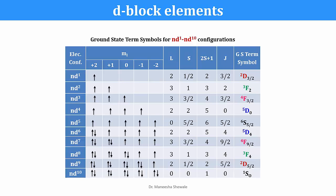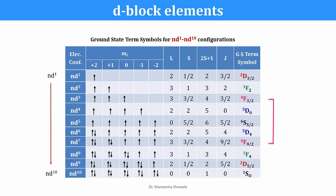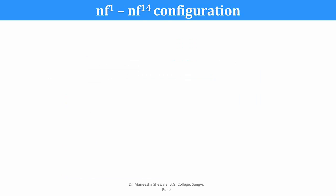The ground state term symbols for ND1 through ND10 configurations are shown in the table. Once you obtain the term symbols for all configurations, you will find that ND1 and ND9, D2 and D8, D3 and D7, D4 and D6, and D5 and D10 show a similarity in their term symbols.